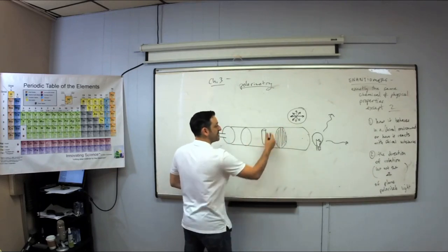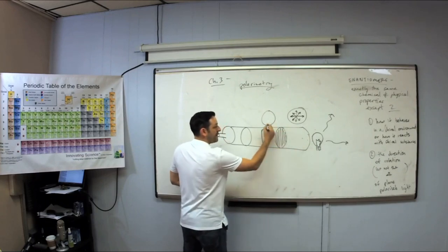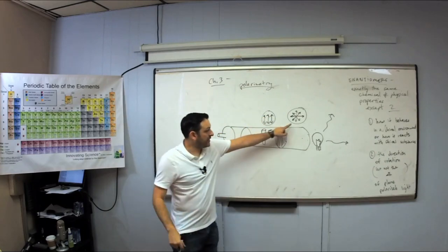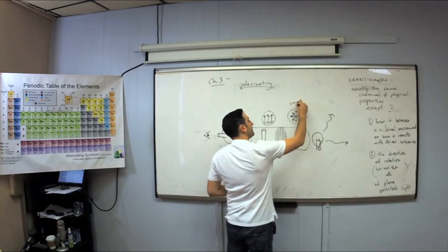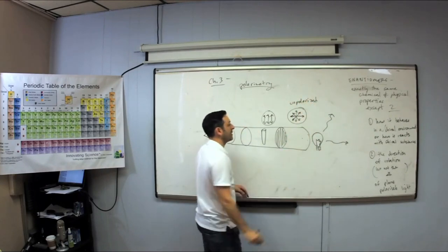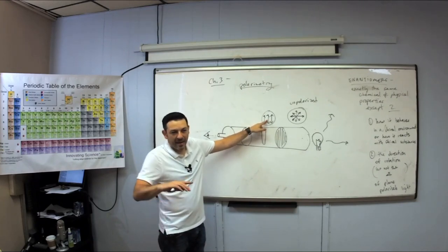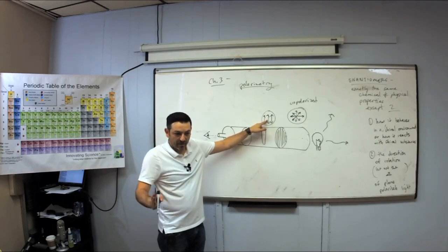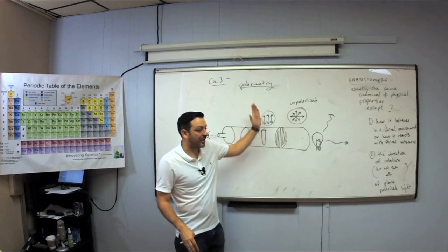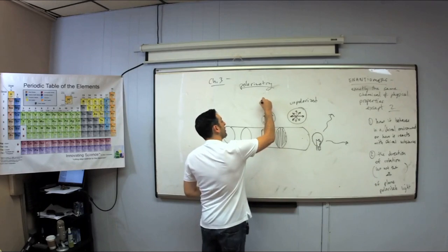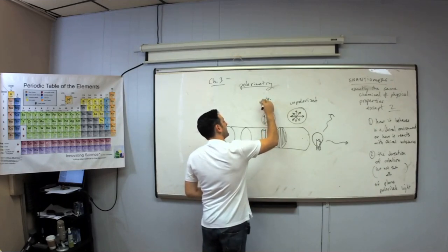So after this disk, the only waves that made it through are the waves moving only up and down. Before, this was unpolarized light. But this light is polarized — polar like North Pole, South Pole — polarized up and down in the vertical plane. Do you see everything is in one plane? This is vertically polarized light.